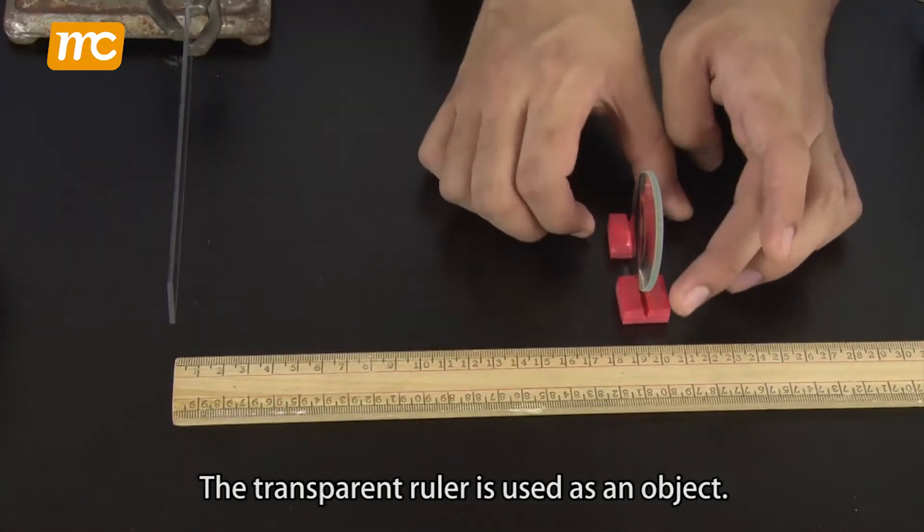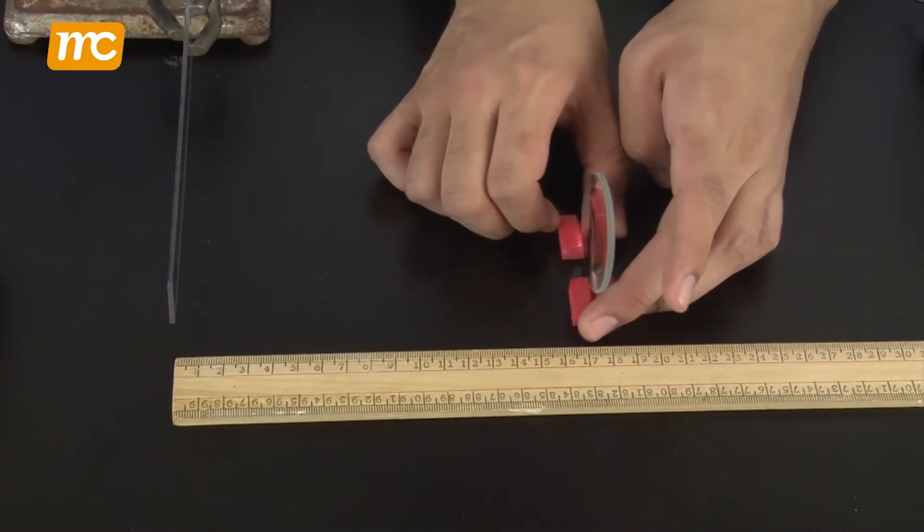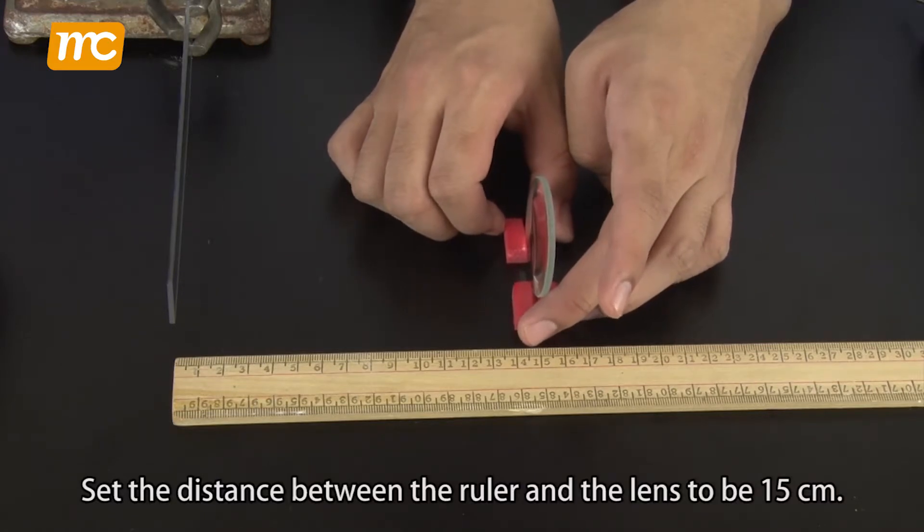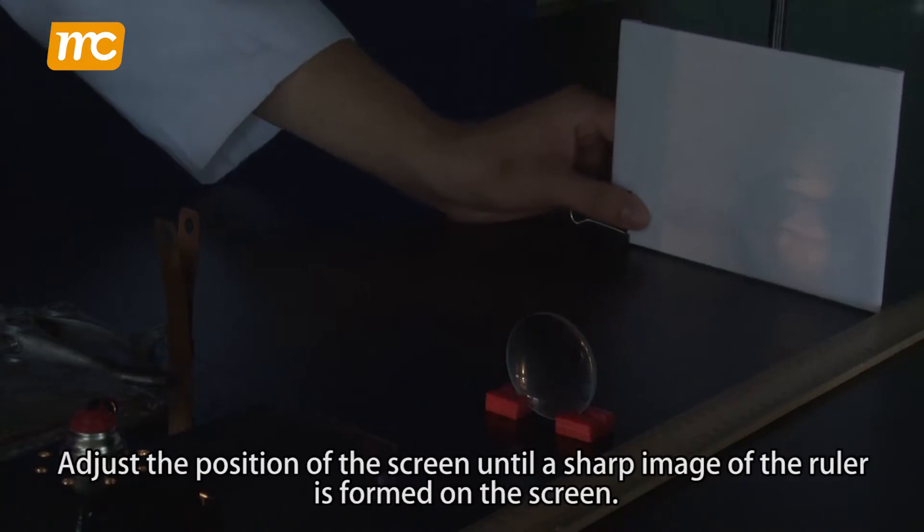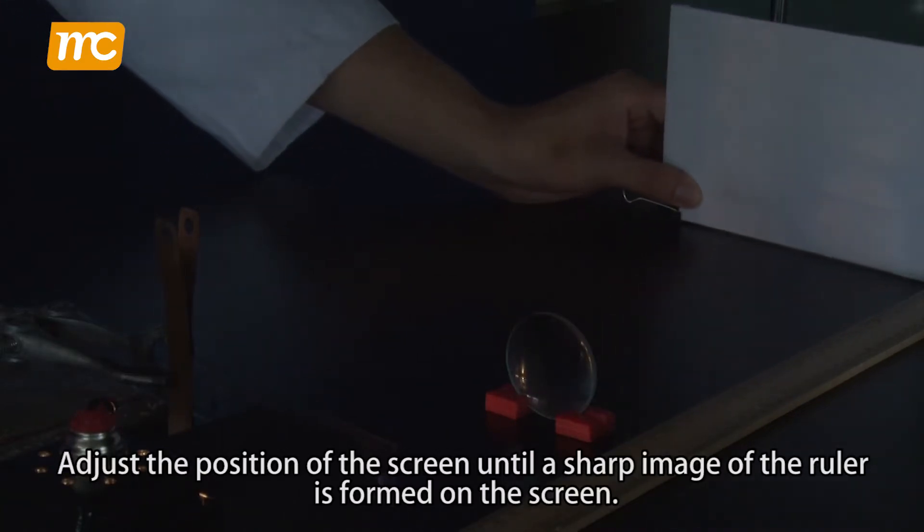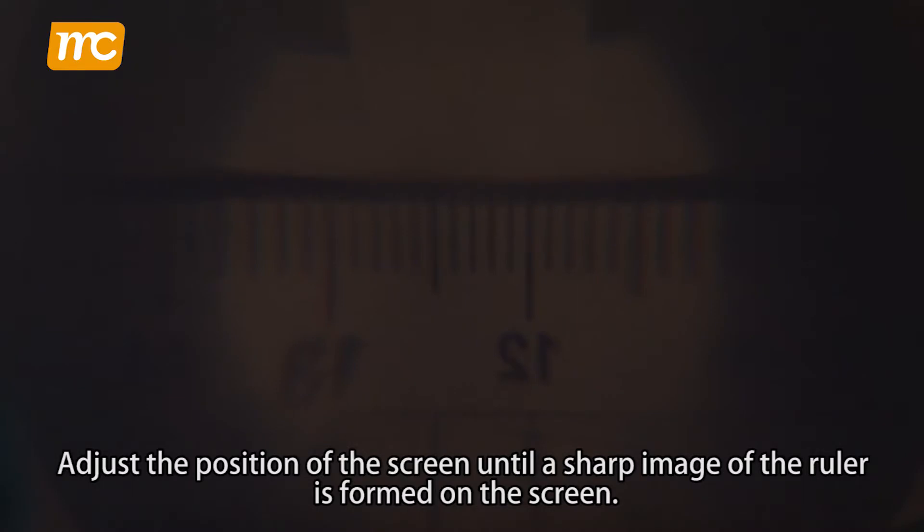The transparent ruler is used as an object. Set the distance between the ruler and the lens to be 15cm. Adjust the position of the screen until a sharp image of the ruler is formed on the screen.